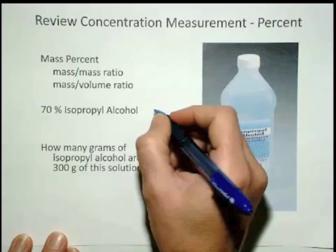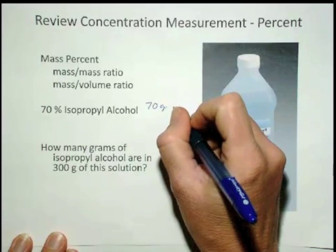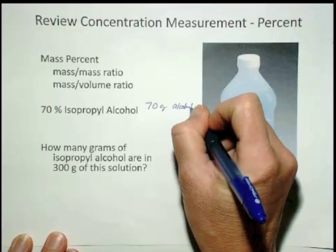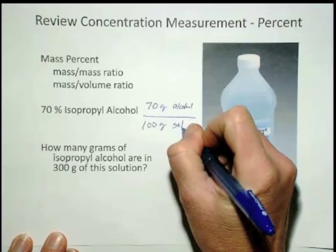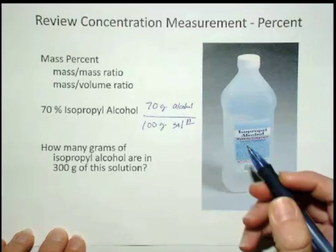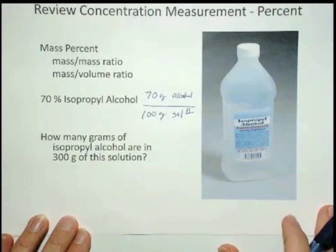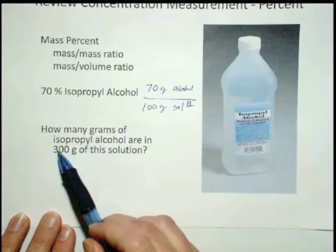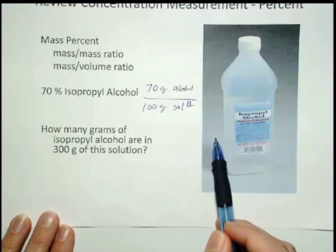What that means is that there's 70 grams of isopropyl alcohol per 100 grams of the solution. In this case, it's an aqueous solution. You could use that information — the fact that it's a 70% solution — to answer this question: how many grams of isopropyl alcohol are in 300 grams of this solution?